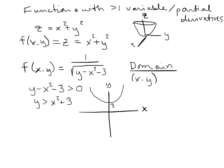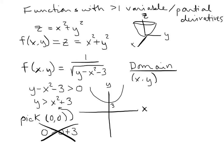I'll pick a test point — zero, zero seems easy. Plugging into the inequality: is 0 greater than 0 plus 3? No, zero is not greater than three. So zero, zero is not in the domain. Because zero, zero is outside the parabola and doesn't work, nothing outside the parabola is in the domain — it's going to be everything inside the parabola.